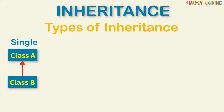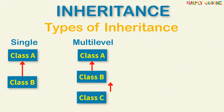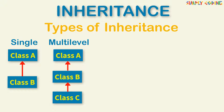Starting with single inheritance: in single inheritance, a subclass inherits the features of one superclass, so class A is the base class for the derived class B. You can also have multi-level inheritance, where a derived class inherits from a base class and that derived class also acts as the base class for another class. So class A serves as the base class for derived class B, which in turn serves as the base class for derived class C.